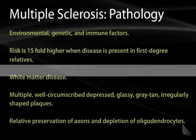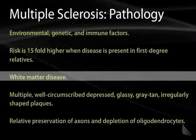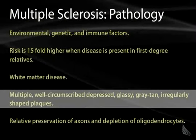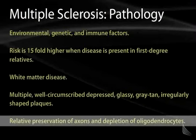It is a white matter disease with multiple well-circumscribed, depressed, glassy gray-tan irregular shaped plaques. The plaque represents an area of demyelination. There is a relative preservation of axons and depletion of oligodendrocytes in multiple sclerosis.